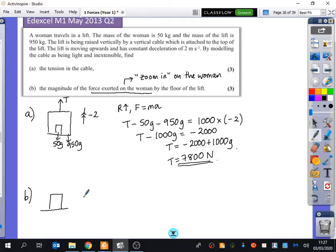And this woman is experiencing only two forces. She's always going to experience her weight, which is 50g. But she experiences another force. And the other force that you're experiencing is the upwards force, which is the normal reaction. Now this R that we've got here is the force exerted on the woman by the floor of the lift. That is what this R is.